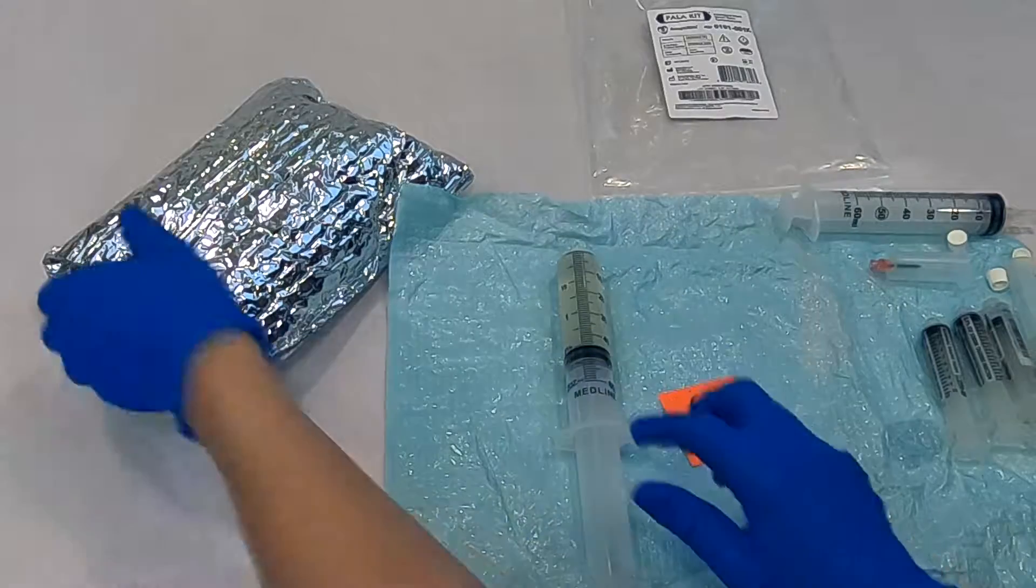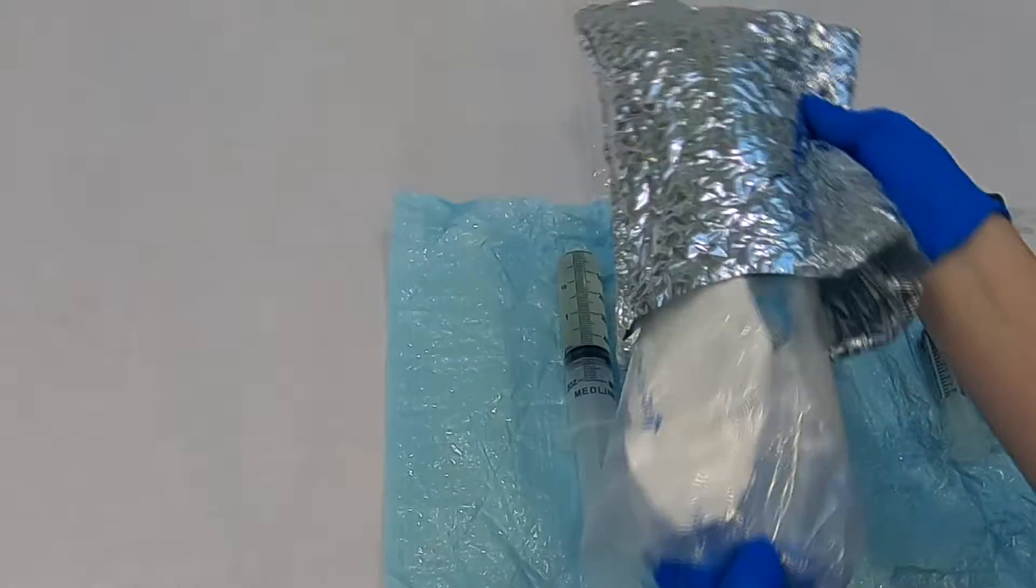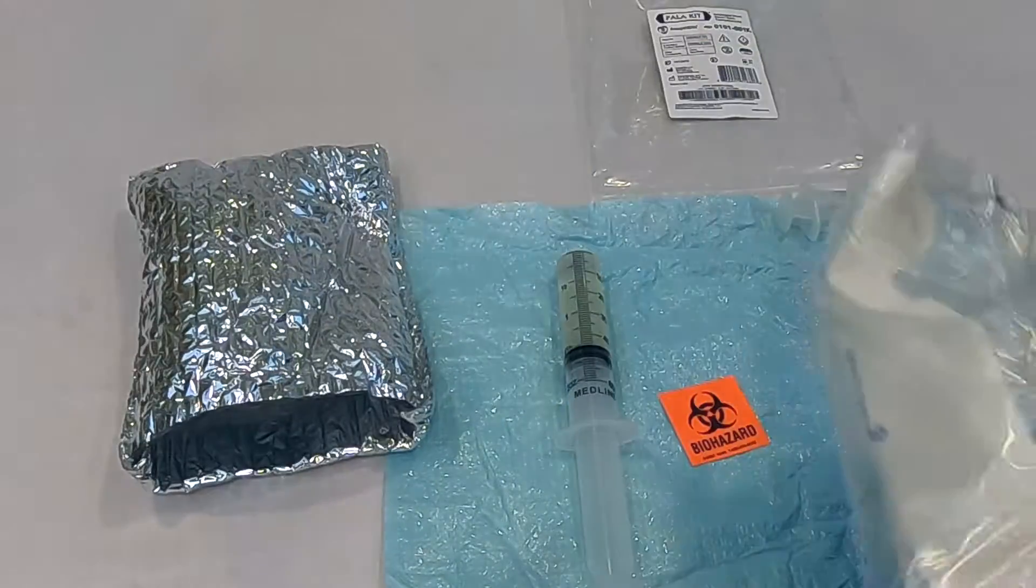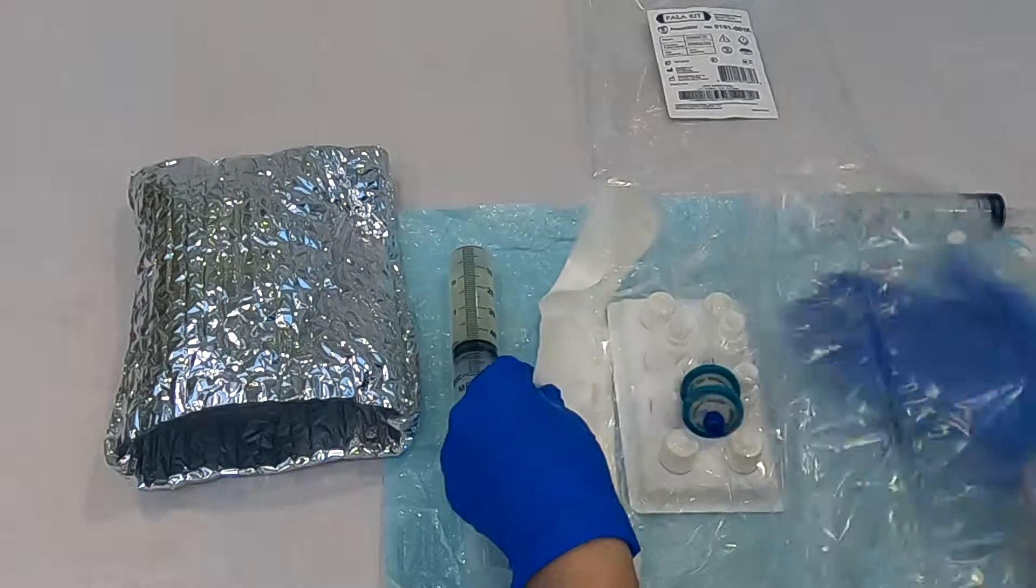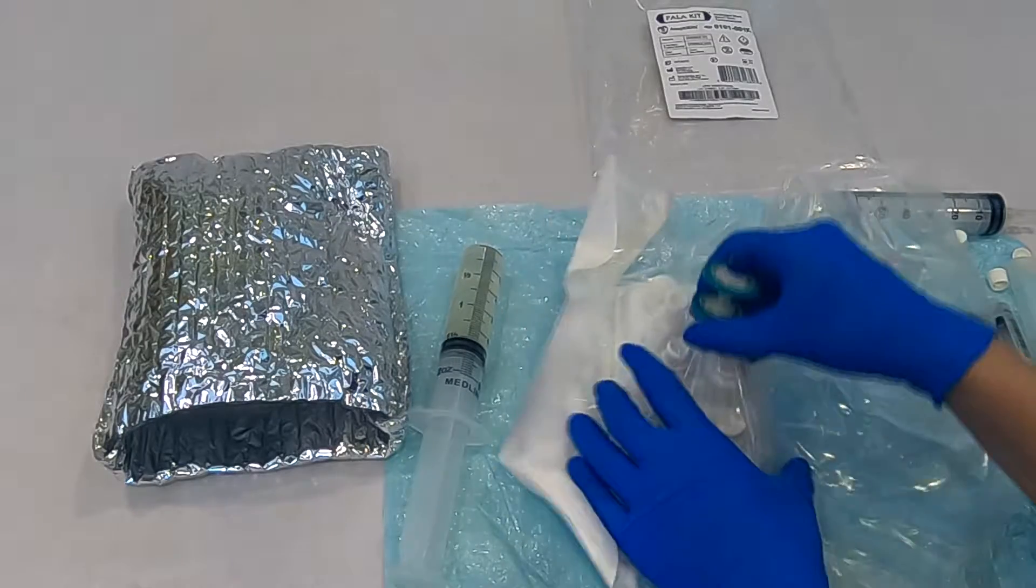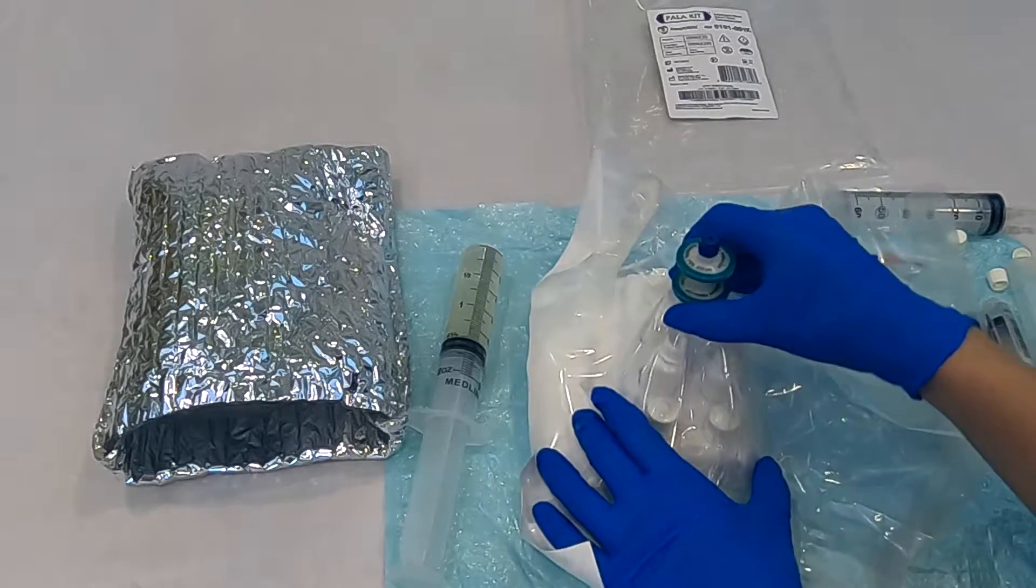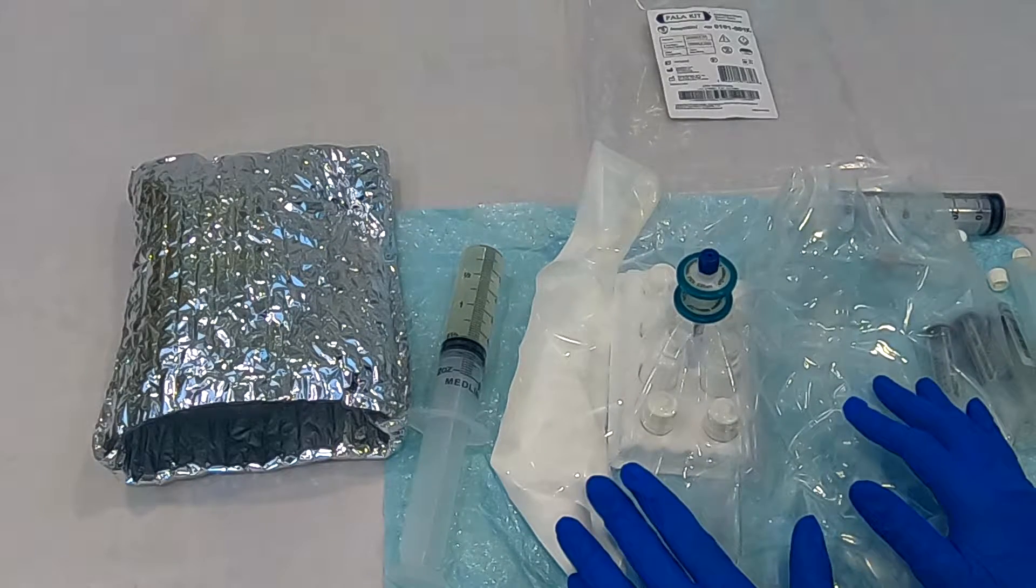Remove the polysteril kit from the insulated pouch. The polysteril kit is a sterilized closed system processing bag with an integral 0.2 micron syringe filter. The 0.2 micron syringe filter produces eyedrops that have a sterility assurance level of 10 to the negative 6.